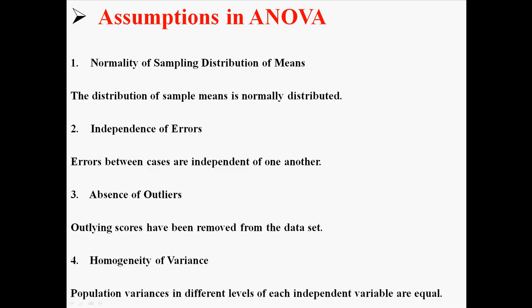And the fourth is homogeneity of variance. Population variances in different levels of each independent variable are equal. And there's actually a special test for that, which I won't do now, but we'll do it when we start doing ANOVAs.